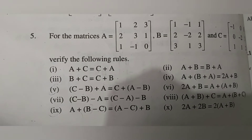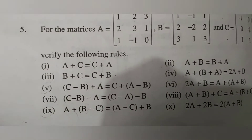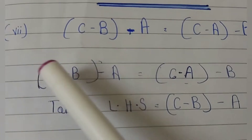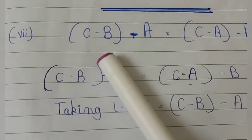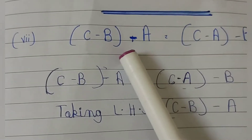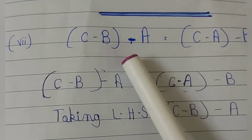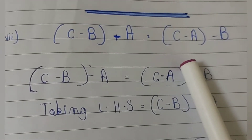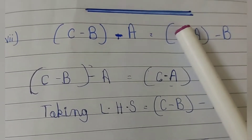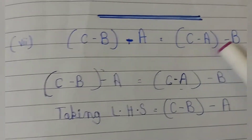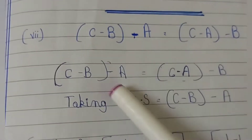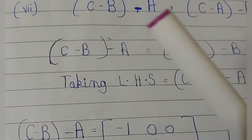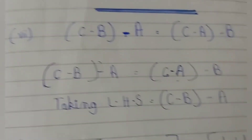Part 7 states: (c minus b) minus a is equal to (c minus a) minus b. This is what we have — in the previous article we have solved a similar form, but here we will solve this one step by step.